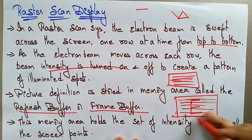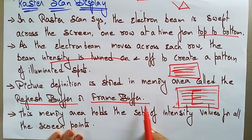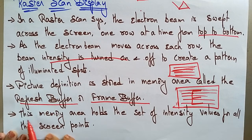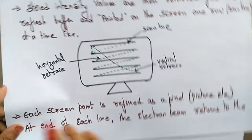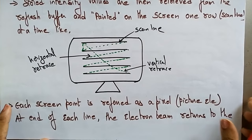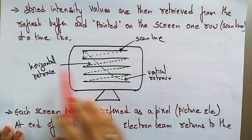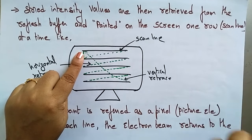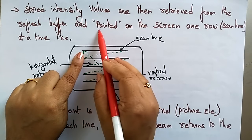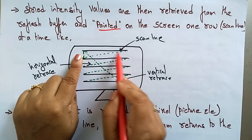The picture definition — whatever picture you want displayed — is stored in a memory area called the refresh buffer or frame buffer. This memory area holds a set of intensity values for all the screen points. The stored intensity values are retrieved from the refresh buffer and painted on the screen one row — that is, one scan line — at a time.